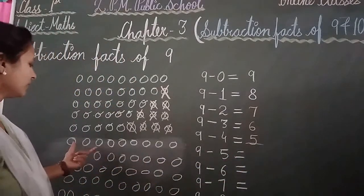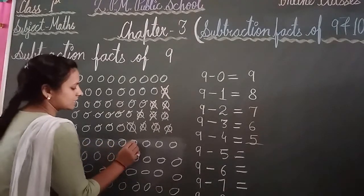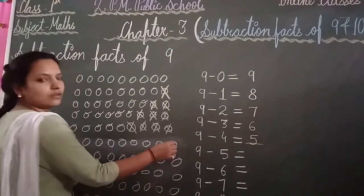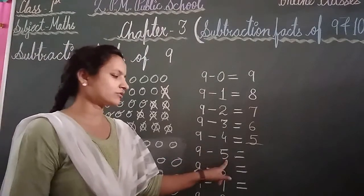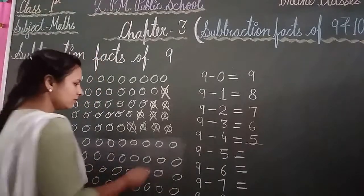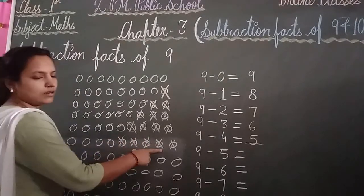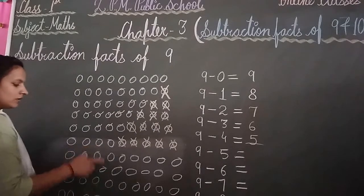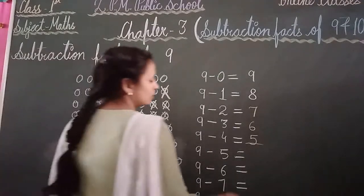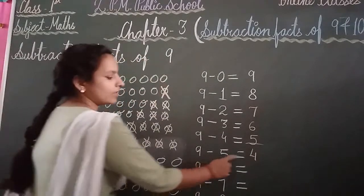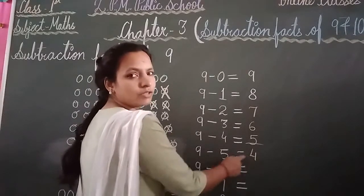Is that clear, friends? Again draw your 9 balls: 1, 2, 3, 4, 5, 6, 7, 8 and 9. Write your digit: 9 minus 5. Cut and cross out 5 balls: 1, 2, 3, 4, 5. Count the balls left: 1, 2, 3, 4. The answer is 4. 9 minus 5 equal to 4.